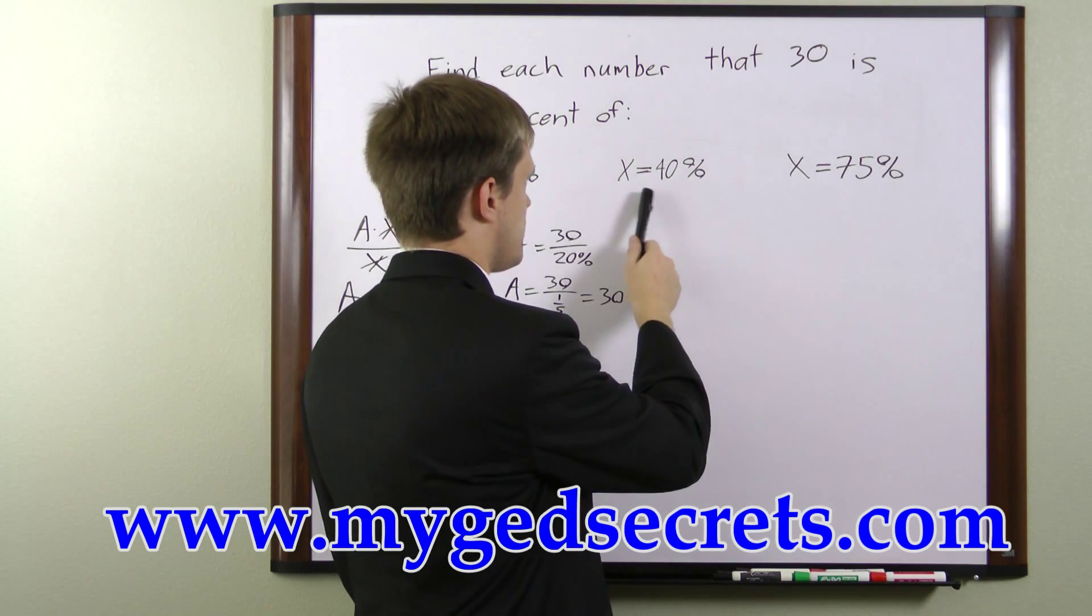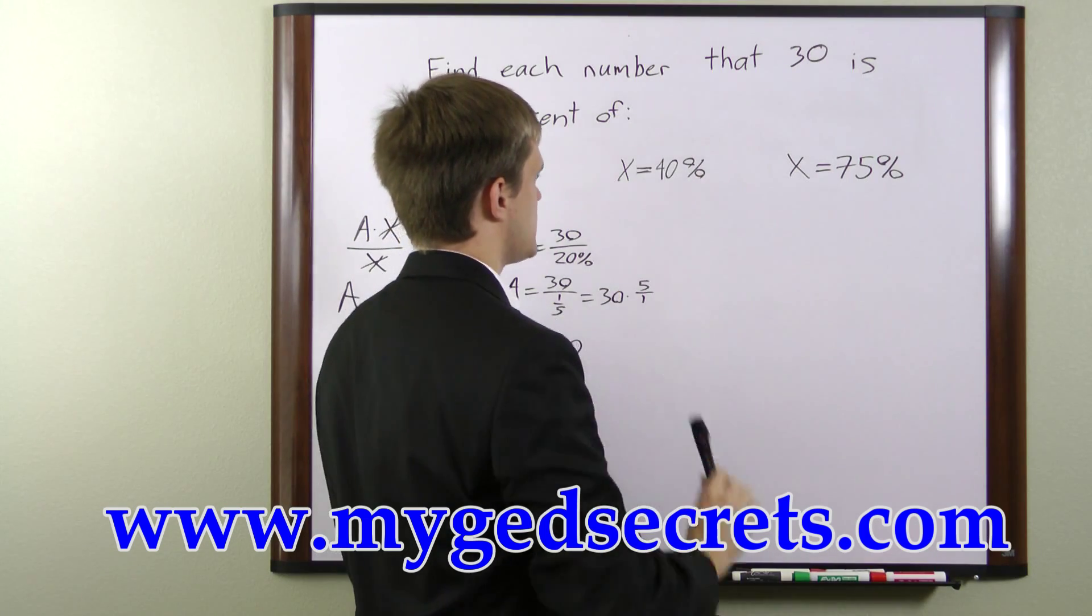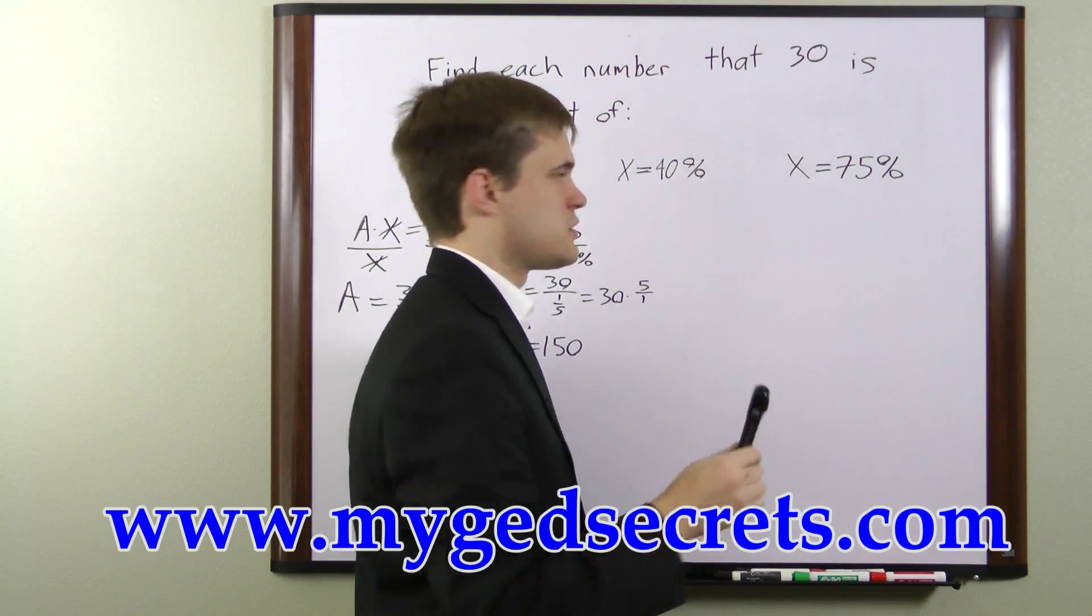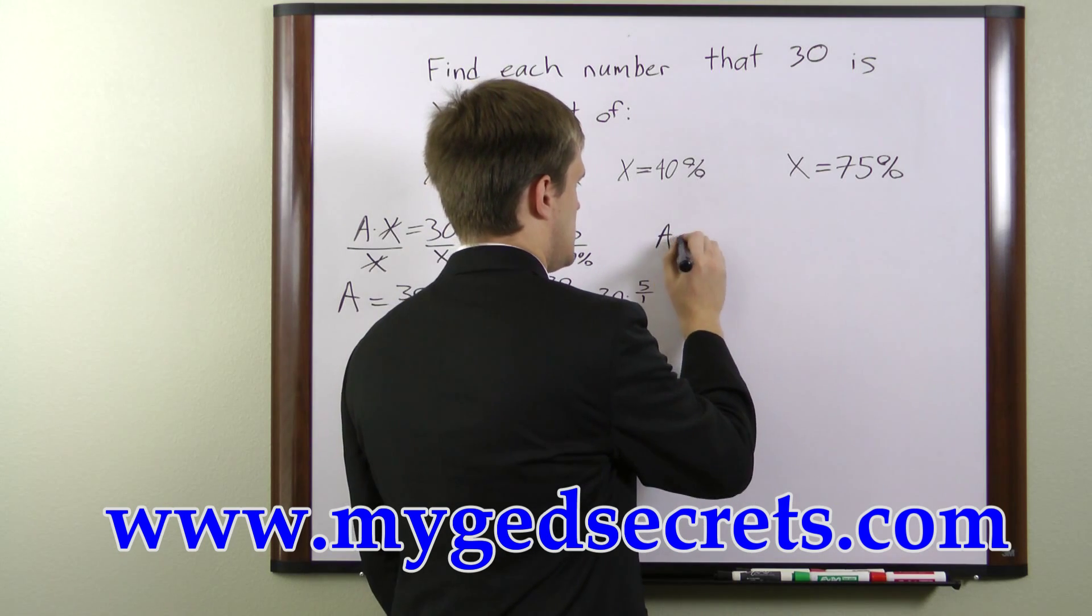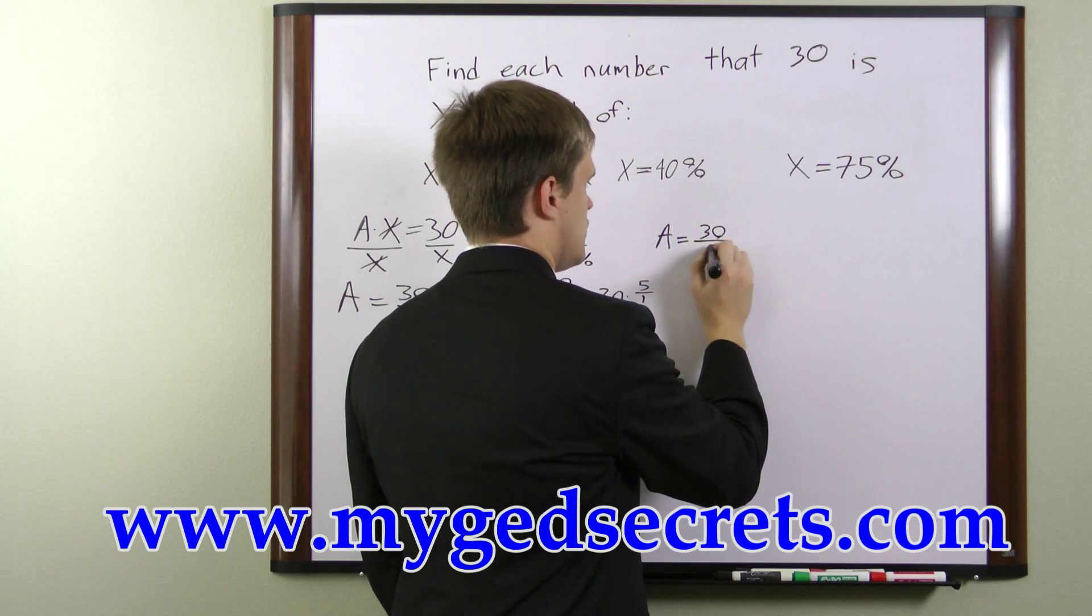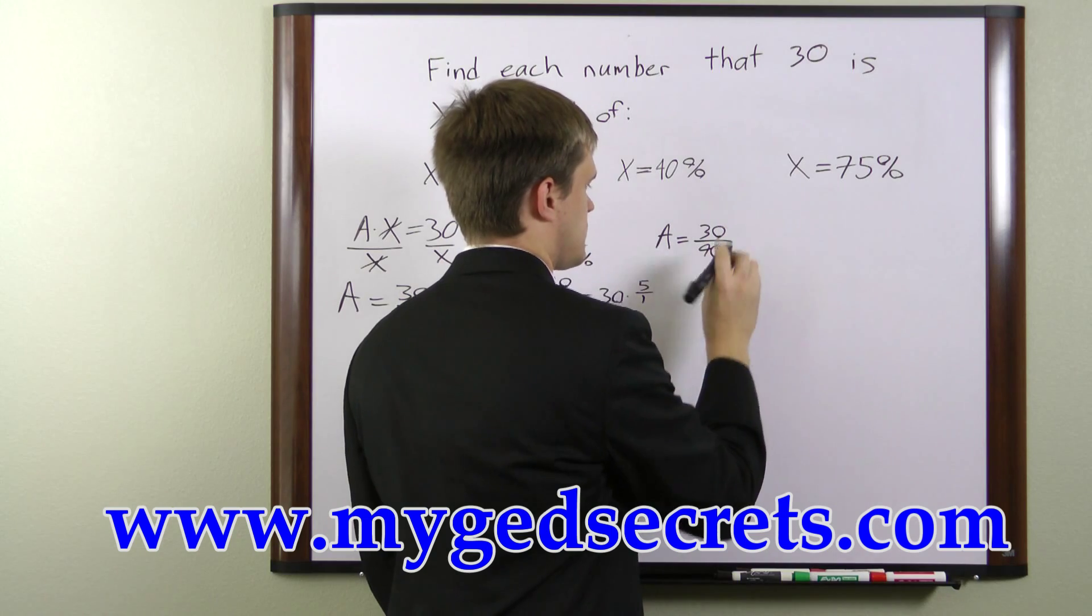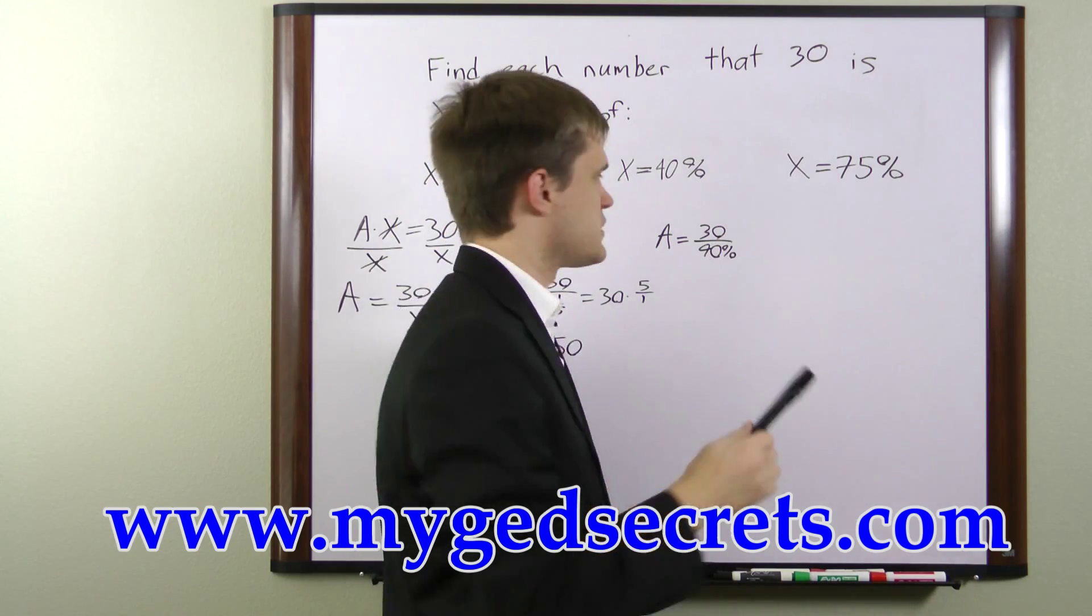In the next example, we have x as 40%. So we can write a equals 30 over 40%. Once again, we're going to convert this to a fraction.